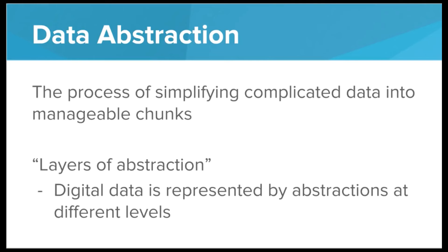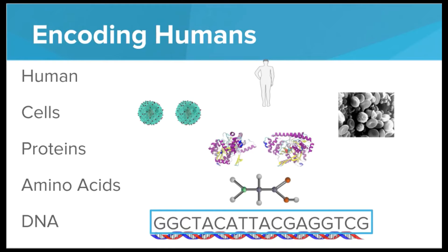This brings up the idea of data abstraction. Data abstraction is the process of simplifying complicated data into manageable chunks, and when we do this, we build out these layers of abstraction. Digital data is represented by abstractions at different levels. In the human body example, the cells would be one layer of abstraction — the cells don't have to worry about what's going on at the DNA level, only how to interact with each other. At the protein level, the proteins don't need to worry about what cells they're part of — just which amino acids build them.